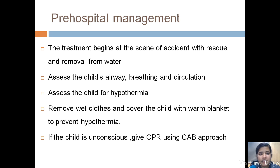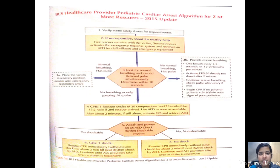Pre-hospital management begins at the scene of accident with rescue and removal from water. Assess the child's airway, breathing, circulation, and also assess for hypothermia. To prevent hypothermia, remove all wet clothes and cover with a warm blanket. If the child is unconscious, provide CPR following the CAB approach — first assess scene safety. If the child is unresponsive with two rescuers, shout for nearby help; the first rescuer remains with the victim while the second activates the emergency response system and AED. Look for normal breathing and check the carotid pulse within 10 seconds. If there is normal breathing and pulse, place the victim in recovery position and wait for the emergency response to arrive.